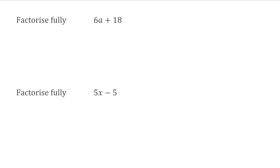For this first question, we have 6a plus 18. To begin with, I'm going to look for the parts that I can factorise, starting with the numbers. I've got 6 and 18, and the highest common factor of both of those is 6. In terms of the letters, I only have an a on one side of the expression, so it's not common and we're not going to put it on the outside of the bracket.